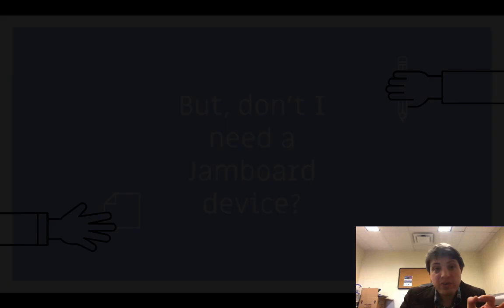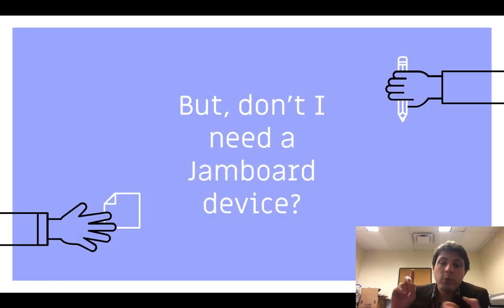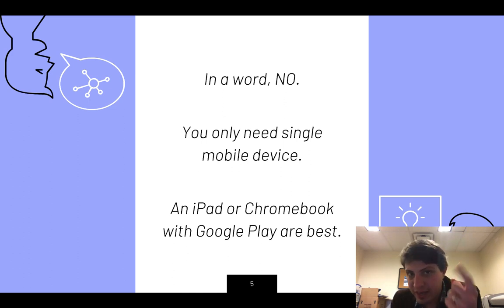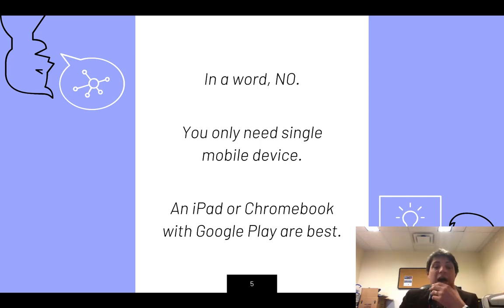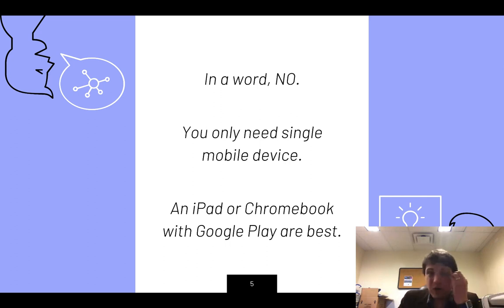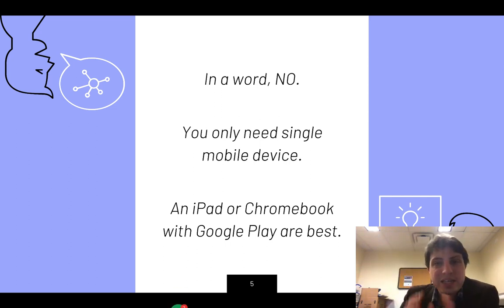I want to be very clear that you do not need the Jamboard device. You just need a mobile device. You don't need the $5,000 object from Google. You just need at least one mobile device — that can be an iPad or a Chromebook with Google Play. Those are the two best ways of doing it because you get all of the features of the Jamboard service. You can also use the web service, although the web service is view-only.